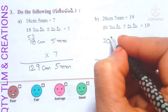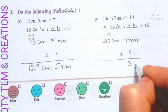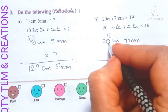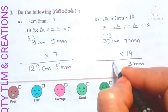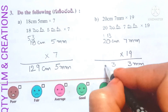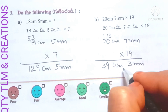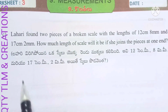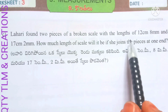Next, 20 centimeters 7 millimeters multiplied by 19. 7 millimeters times 19 equals 133 millimeters; write 3 carry 13. Working through the multiplication gives a result of 393 centimeters and 3 millimeters.